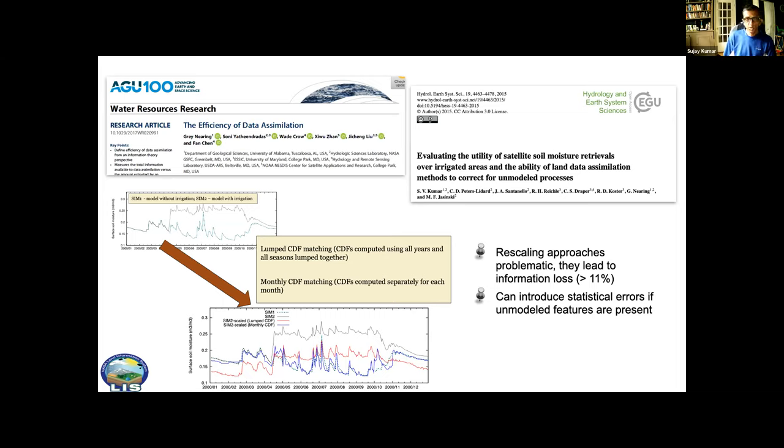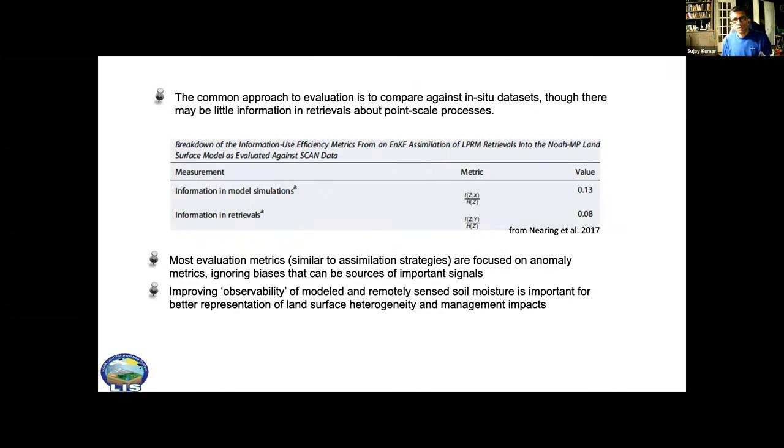If you use a seasonal approach it does better, the blue line, but you're not really capturing that bias signal which understandably the algorithm is removing. The issue here isn't the rescaling itself. It's the fact that we don't really know the soil moisture climatology and that's why we are applying all these methods to get around it.